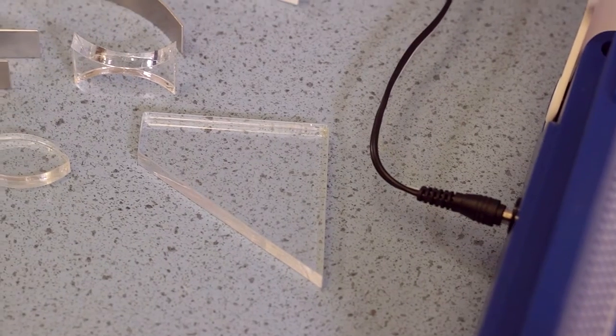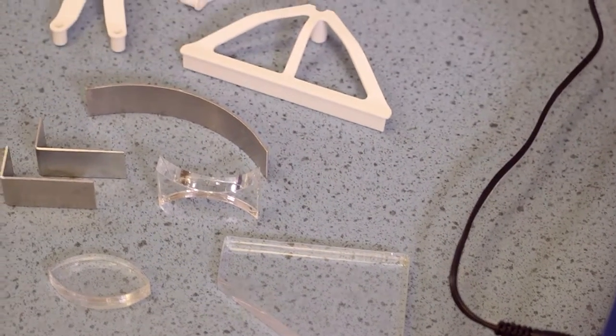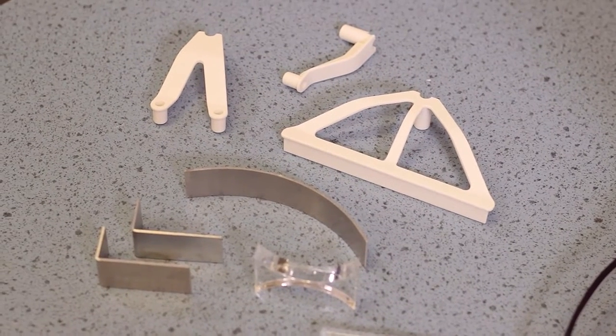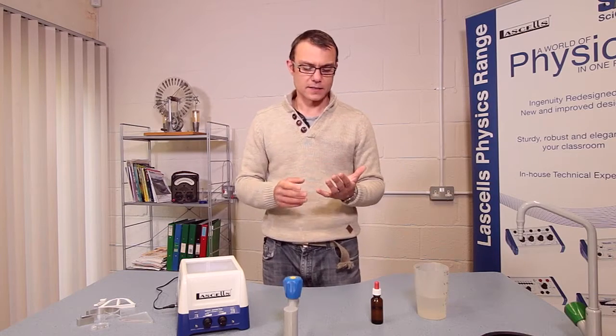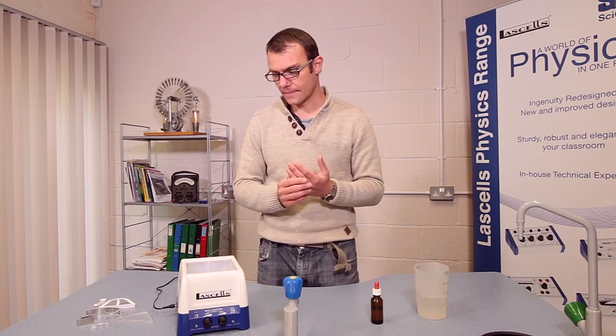Now, the tank is supplied with a range of accessories here. We have a set of shapes for refraction work. There are some barriers for reflection and diffraction, and there are three dippers. There's a single point dipper for doing circular waves, a twin point dipper for interference, which I've got in here now, and a plane dipper that can be used for reflection, refraction, diffraction, and so on. And with that in mind, why don't we take a closer look at those phenomena in action.